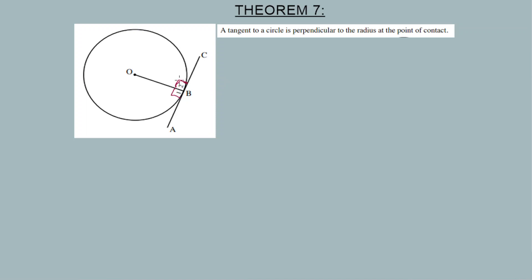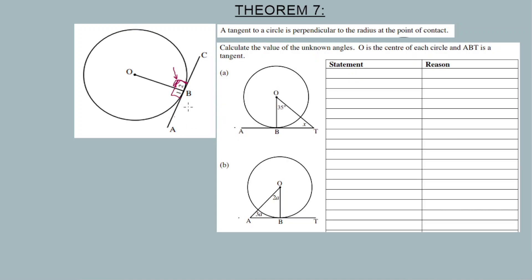There's also another proof where you show or prove that a line is a tangent by calculating 90 degrees. Theorem number 7 states that a tangent is perpendicular to the radius. Theorem 7 also has a converse.